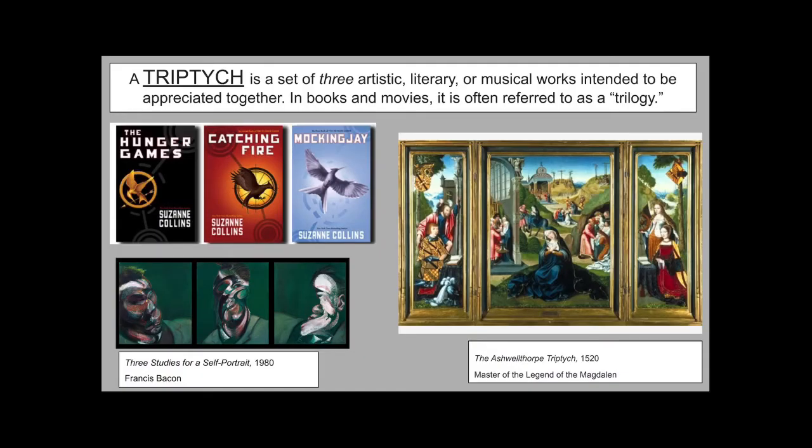A triptych is a set of three artistic, literary, or musical works intended to be appreciated together. In books and movies it is often referred to as a trilogy. Think about the word triptych and the word trilogy — what do they have in common and why might it have something to do with the number of works in the combination?